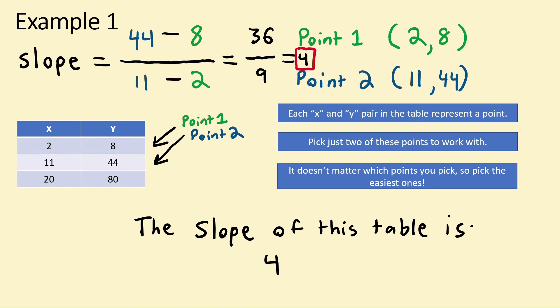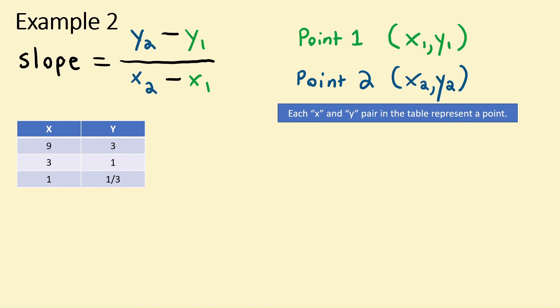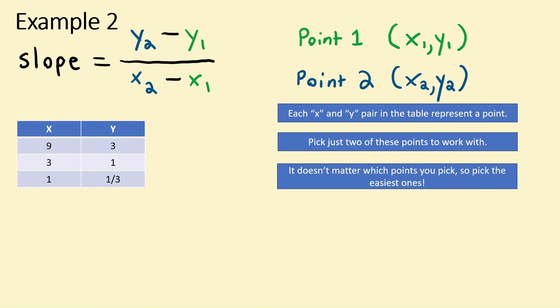Let's just do one final example. Just as before, each x and y pair in this table represent a point, and we only need two points to work with. It doesn't matter which points we're chosen, so let's go ahead and pick the easiest ones.